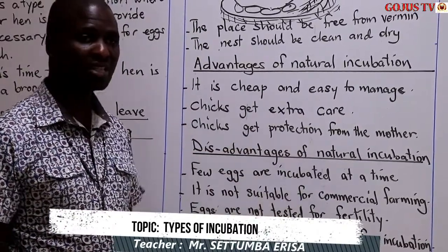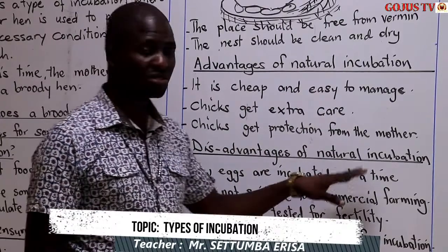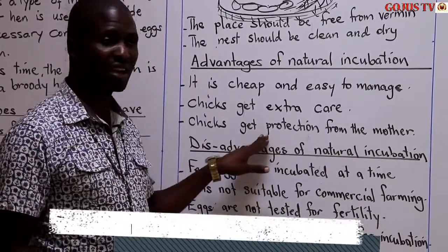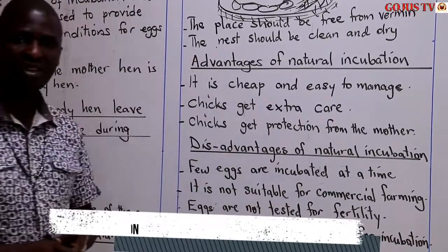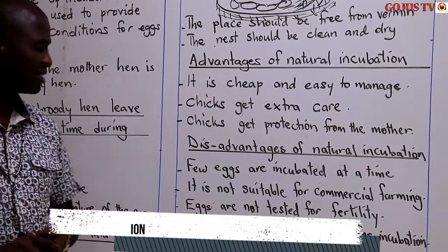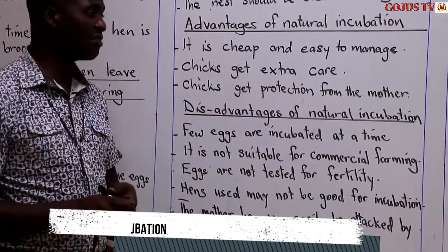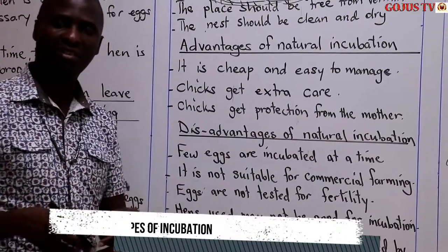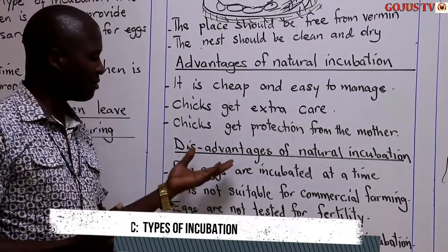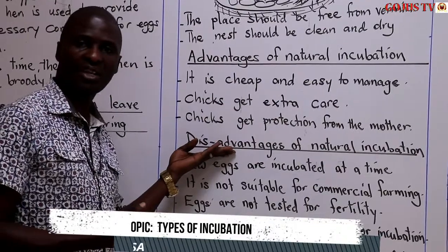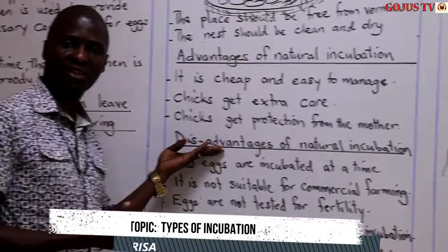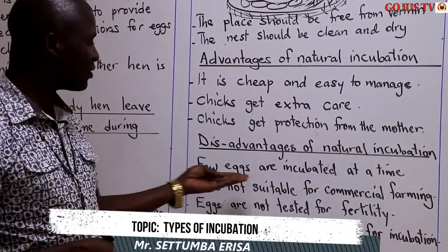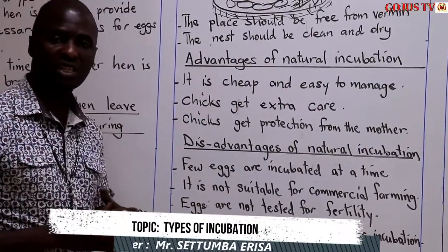When birds like eagles and kites come to snatch our chicks, the mother hen is there to protect them. Now we are going to look at the disadvantages of natural incubation — the bad things that are under natural incubation, unlike with artificial incubation. Number one: few eggs are incubated at a time.